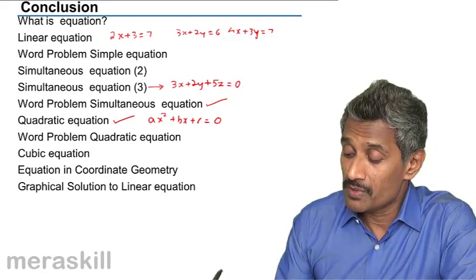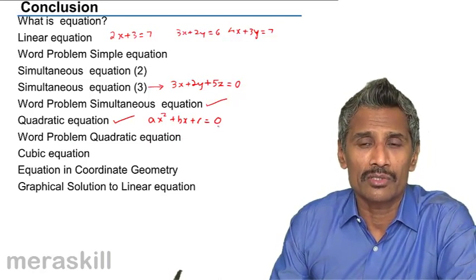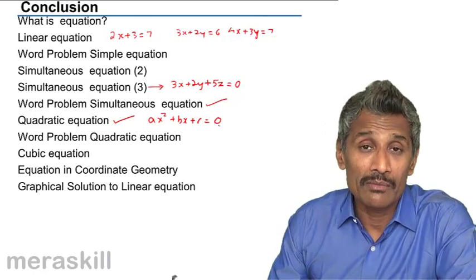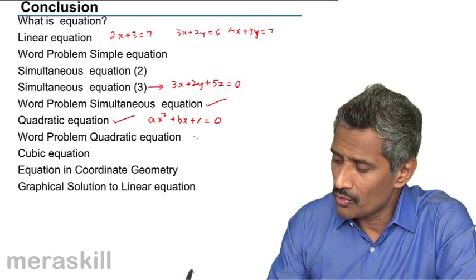Word problems based on quadratic equations we did. Simple things, suppose the product of two numbers is 6 and one number is one more than the other, so we say x bracket x plus 1 is 6, so this becomes a quadratic equation, word problem using this.